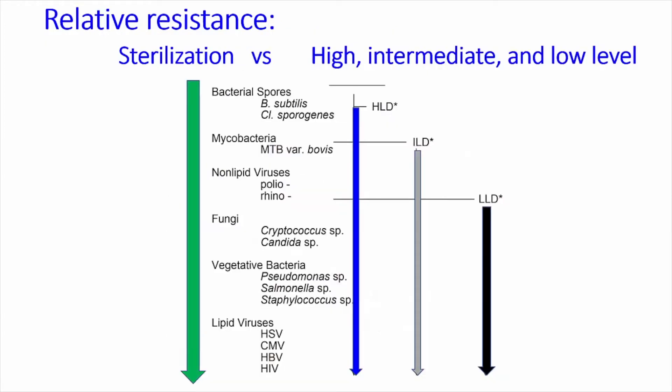This concept of difficulty explains the difference between sterilization — which is an absolute; you have either achieved it or not — versus disinfection, which can be high, intermediate, or low level. Low-level disinfectants cover the easy viruses, vegetative bacteria, and fungi. Intermediate covers most non-lipid protein-coated viruses. High-level disinfectants reach mycobacteria and even some less resistant spores. But only sterilization will inactivate everything.